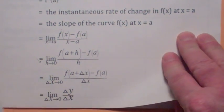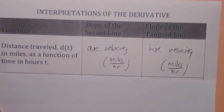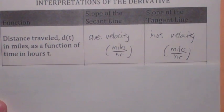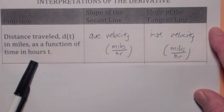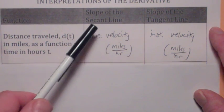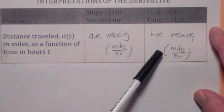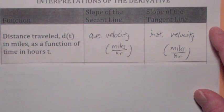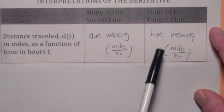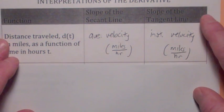The last thing I want to talk about today is some interpretations of the derivative or the slope of the tangent line. If the function stands for the distance traveled in miles as a function of t in hours, then the slope of the secant line is change in distance over change in time — that's the average velocity. And then as the time interval gets small, the average velocity is getting close to the instantaneous velocity. So the limit would be the instantaneous velocity at some value of t. If you hear the word velocity without 'instantaneous,' it's assumed to mean the instantaneous velocity.